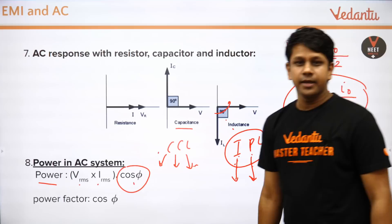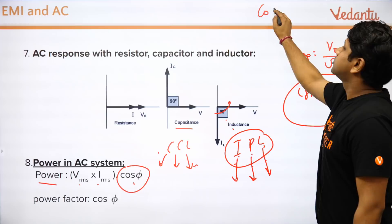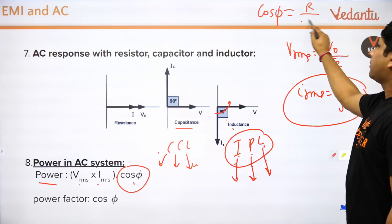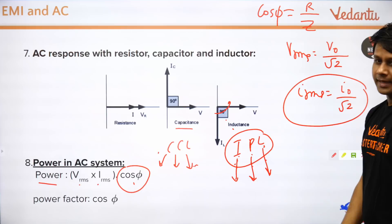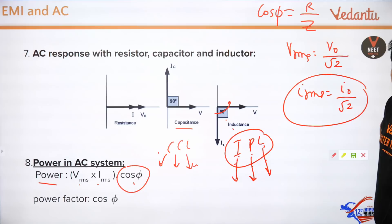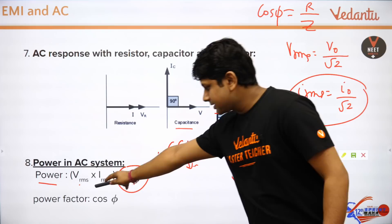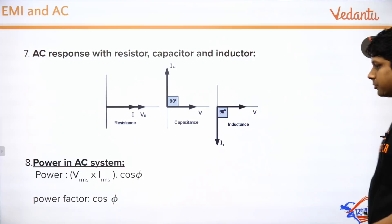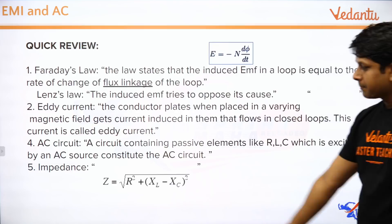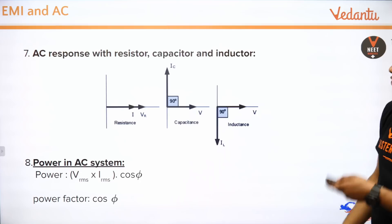In AC circuits, the power factor is cos φ, and the formula for cos φ is R upon Z, where R is resistance and Z is impedance as seen in the previous slide. These formulas are important — take a screenshot if you'd like. Average power is V_RMS × I_RMS × cos φ.